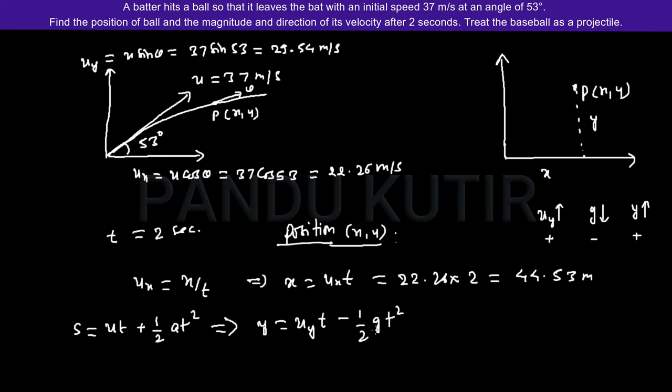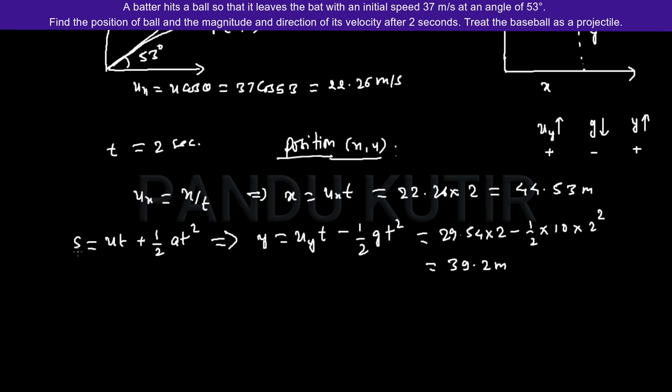Let's put the values: uy equals 29.54 times t which is 2, minus 1/2, I take value of g as 10 into 2 squared. After calculating you get the value of y equals 39.2 meters. So in the given condition the position of the baseball after 2 seconds is (44.53 meters, 39.2 meters).